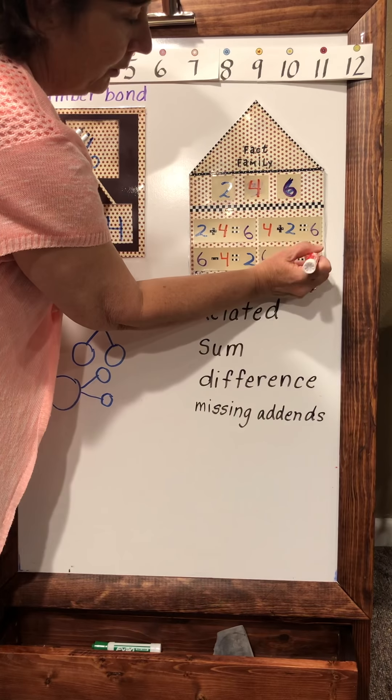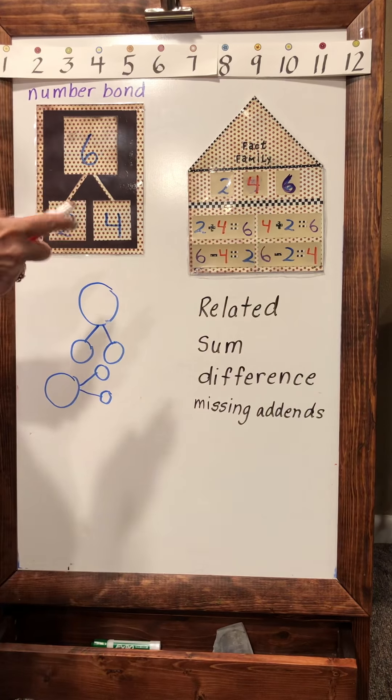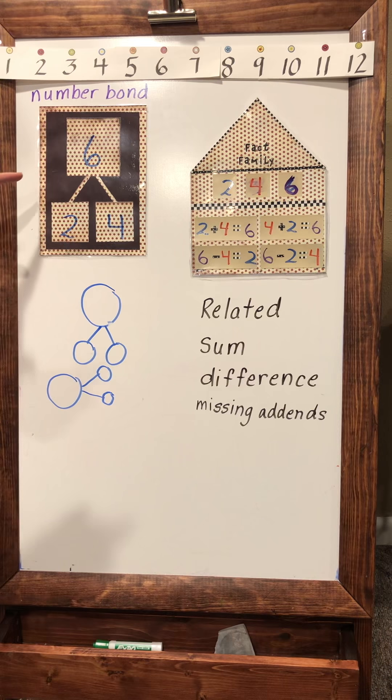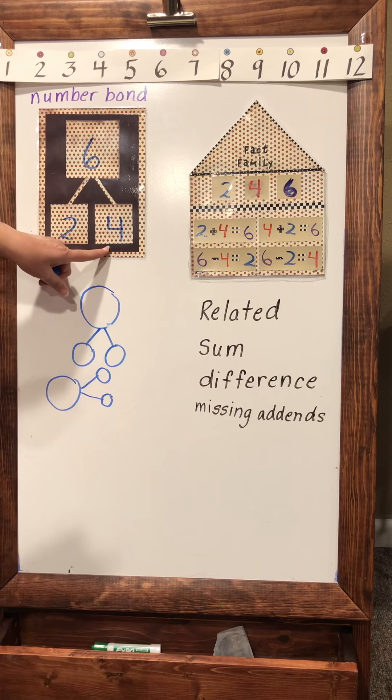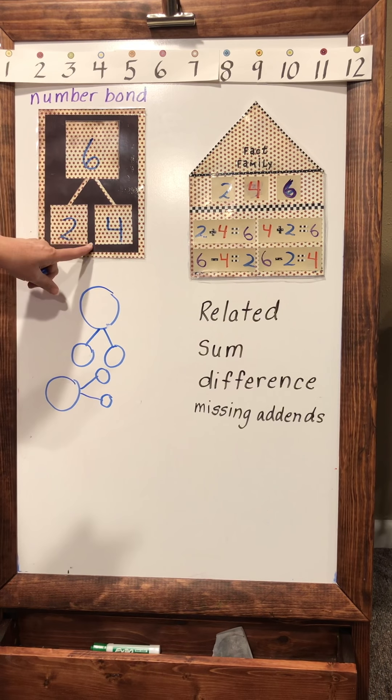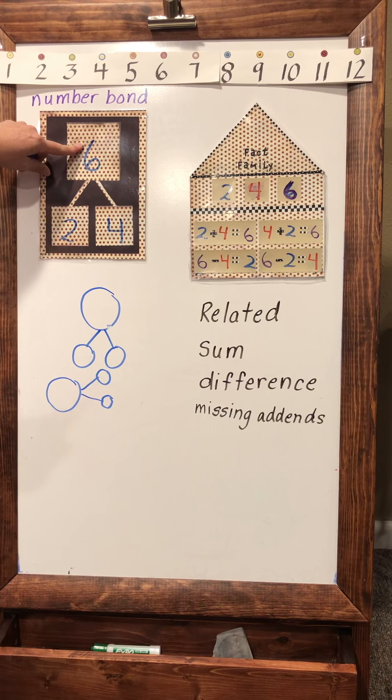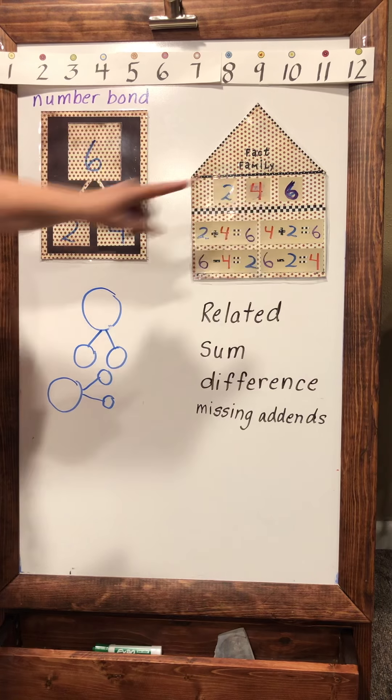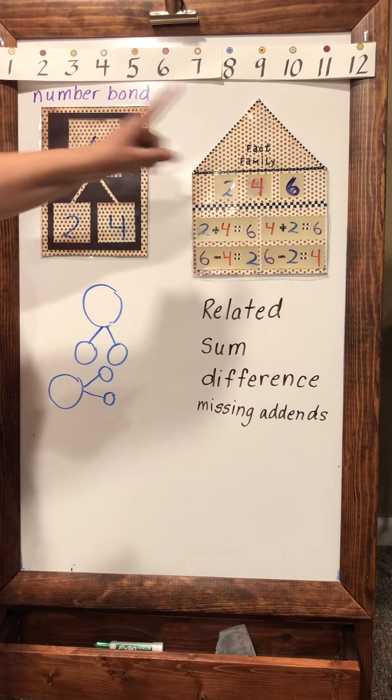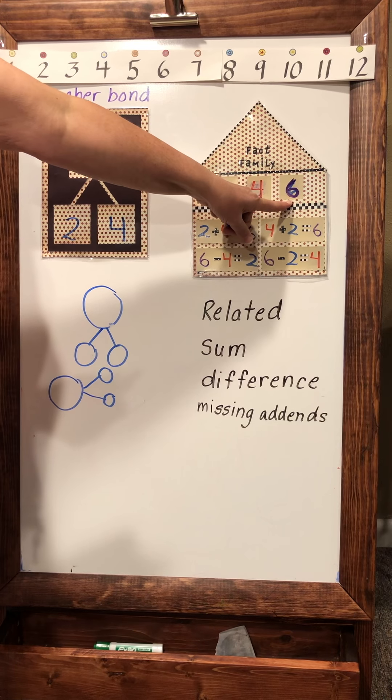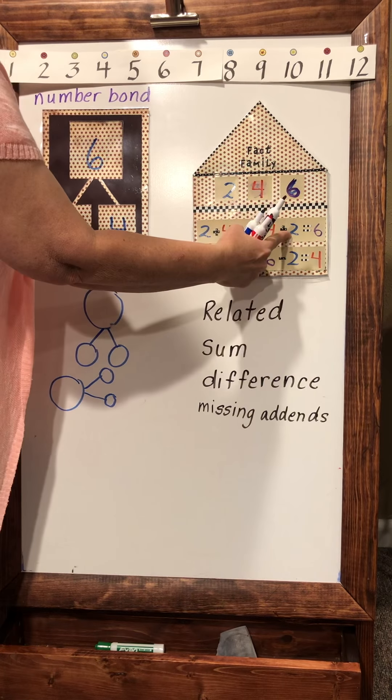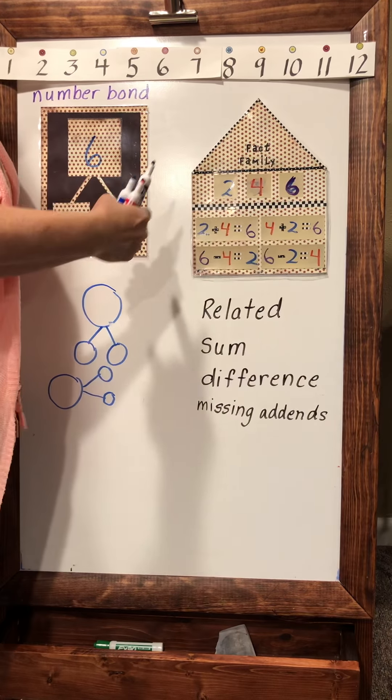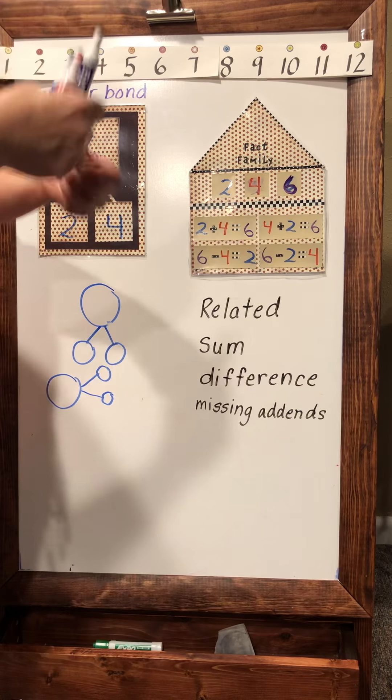So remember again, to practice these, put two numbers that you'd like to use first, add them together to get your third number. This will show the relationship of your fact family. Write them here and your biggest number here so that you can do the addition and subtraction problems that are related, so that you know that the two and a four and a six are related together. There's lots of different ways they're related.